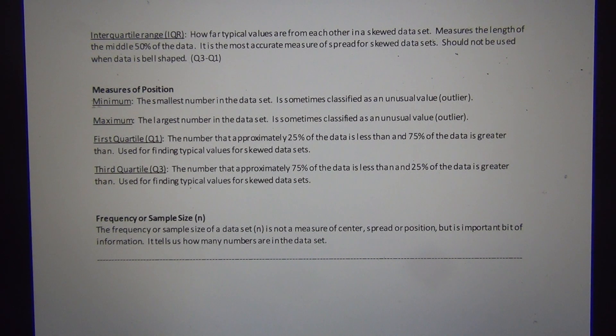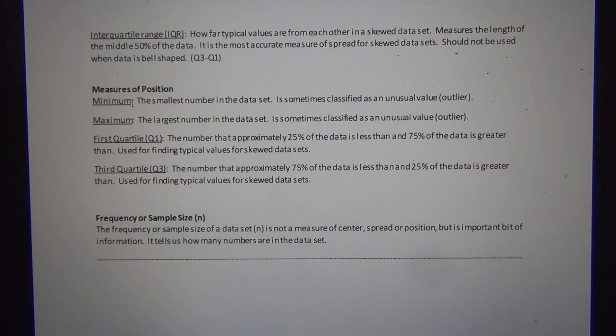For example, the minimum value in the data set is the number that all the other numbers are greater than. So it's the smallest number in the data set. The maximum value in the data set is the largest number in the data set, the number that all the other numbers are less than.